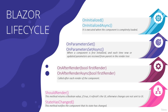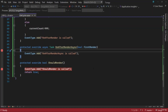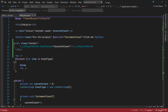StateHasChanged looks at the value returned from ShouldRender to decide if a UI re-render should happen. However, this only applies after the component has been rendered for the first time. To test StateHasChanged, we'll go back to the application on the lifecycle page and add a using statement for System.Threading, because we want to introduce a timer to show StateHasChanged in action. Let's say the timer runs for five seconds, so we'll add a private integer Count set to five.